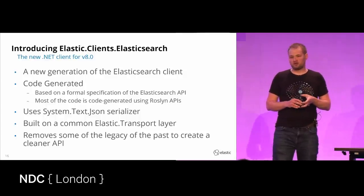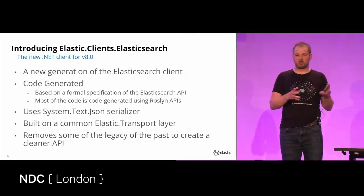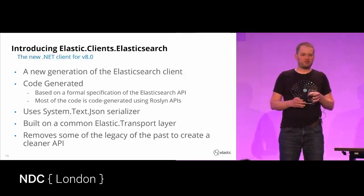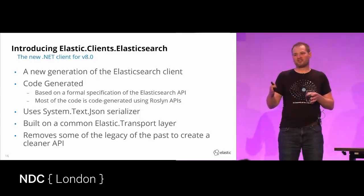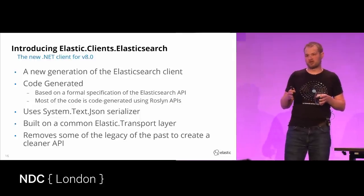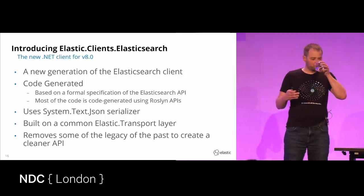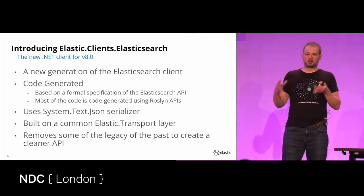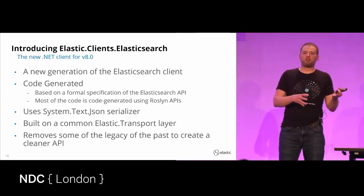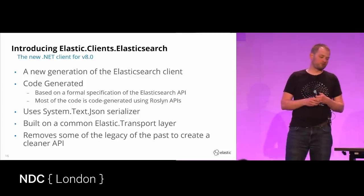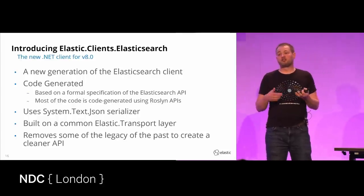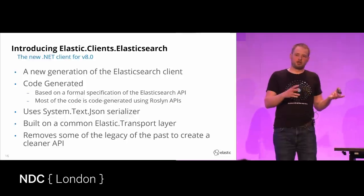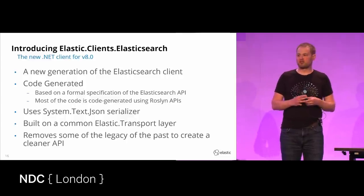Another key change is moving to System.Text.Json for serialization — Microsoft's new in-box JSON serializer. It's been available with .NET for a few releases now, and we're at a point where it does enough for us to use it internally. This means we no longer have to maintain all that serialization code ourselves. Microsoft has done a great job creating a high-efficiency serializer. It's Net Standard compatible, so if you're still on .NET Framework, you can still use it in our newer packages.